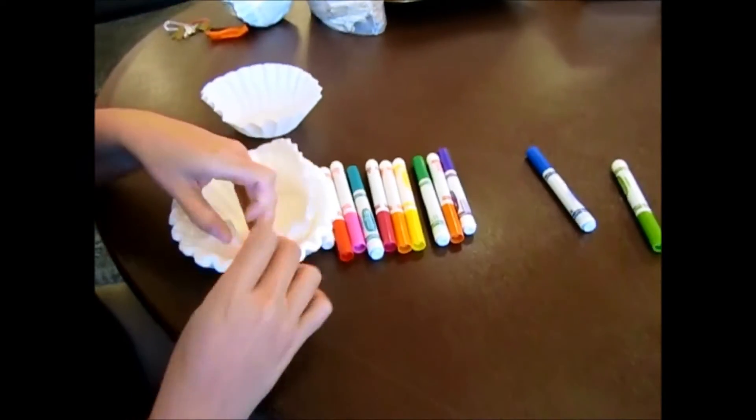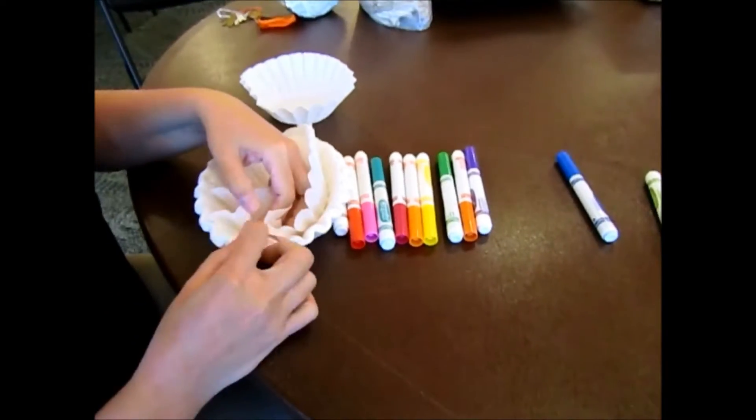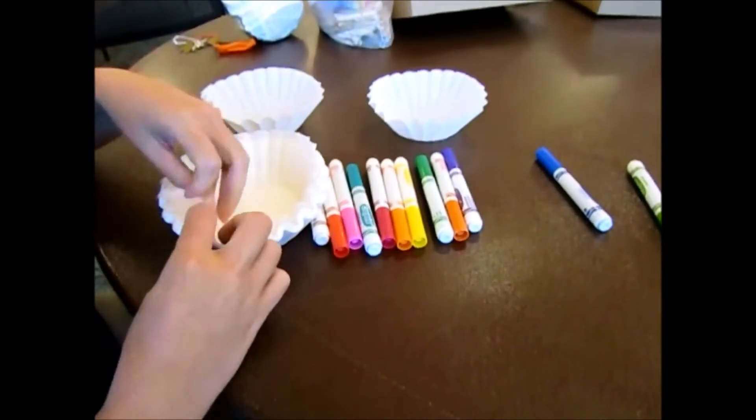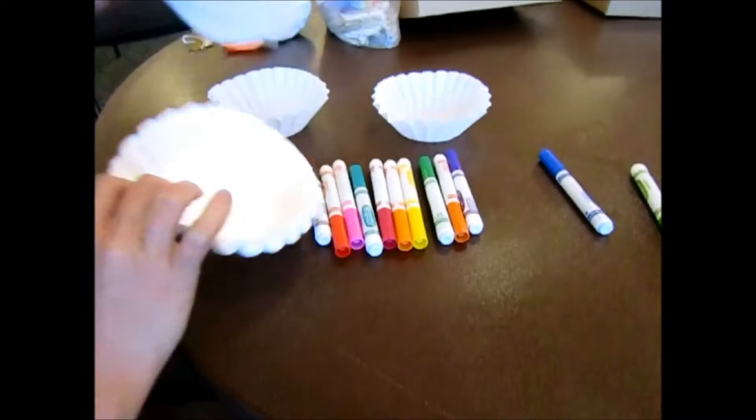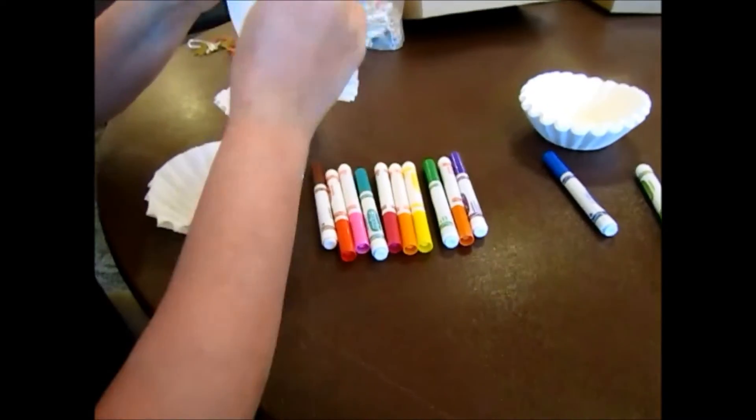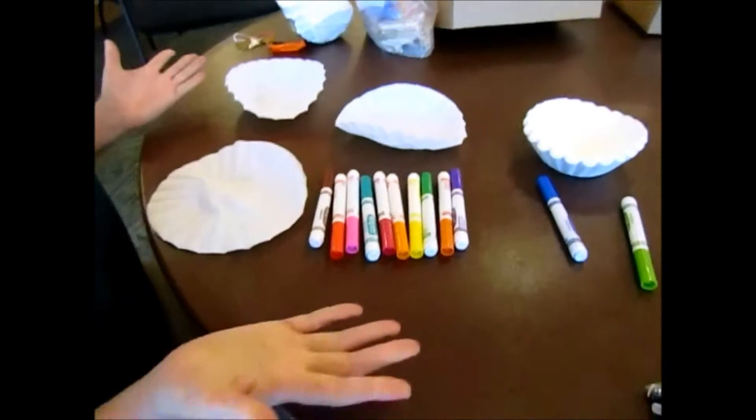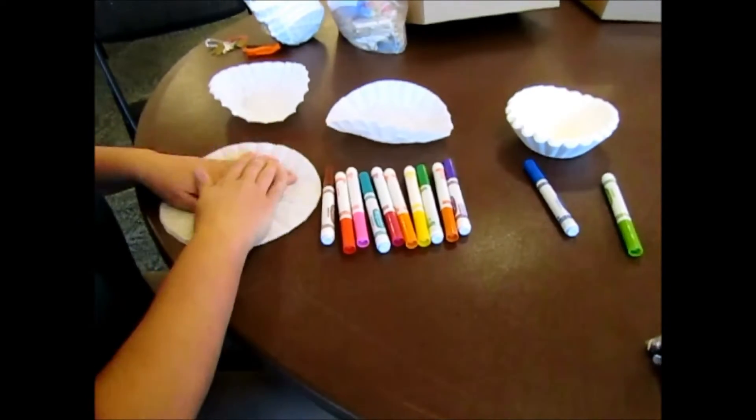something down on the table first. You're going to stretch those out, flatten them out, and then start coloring. You can do any design you want and you do want to color it heavily with the markers